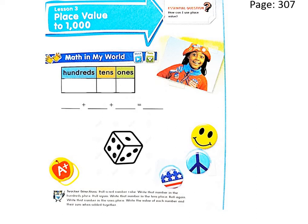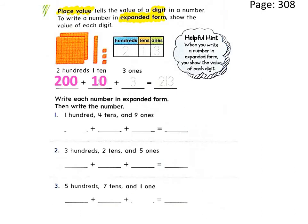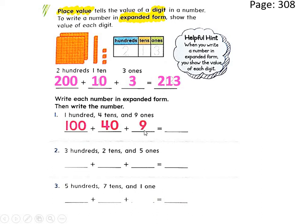Now let's solve the first question in your book, page number 308: write each number in expanded form, then write the number. Question number one: one hundred, four tens, and nine ones. How do we write one hundred? It's simply one hundred. How do we write four tens? It's forty. How do we write nine ones? It's nine. And the number is one hundred forty-nine.